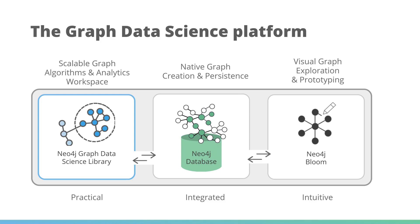This is what Neo4j's graph data science library and indeed the graph data science platform aims to solve. As we talked about in a previous video, there are a set of tools that can help us work with graph data science. We start with the Neo4j database, which hopefully you'll already be familiar with — we've got our Cypher query language, and this is a product that allows you to natively store and query graphs. That's the centerpiece of our graph data science platform.